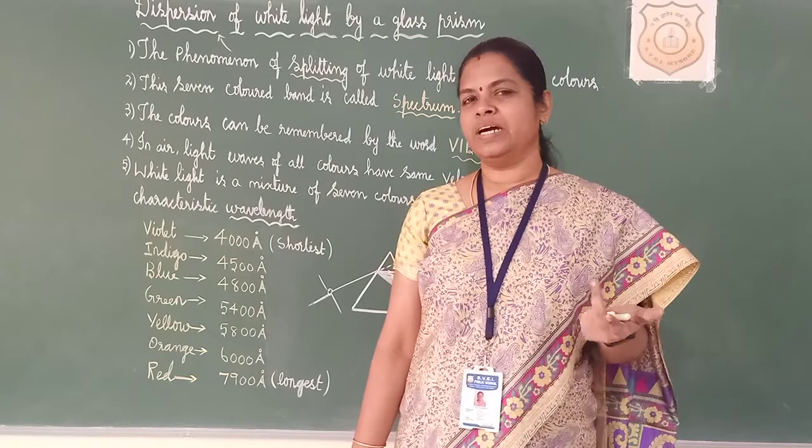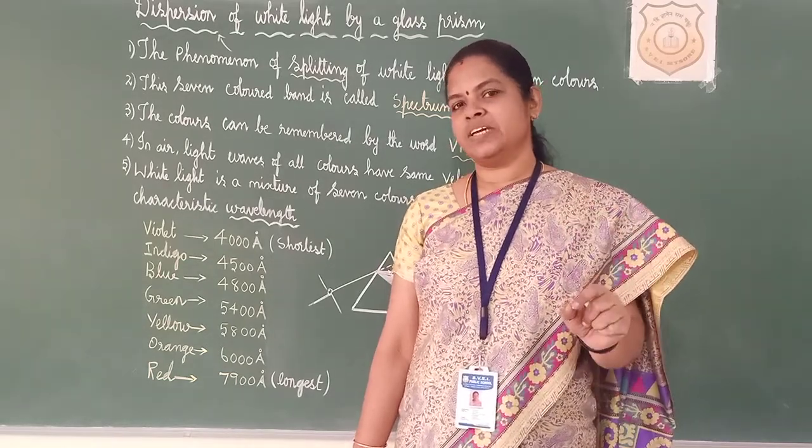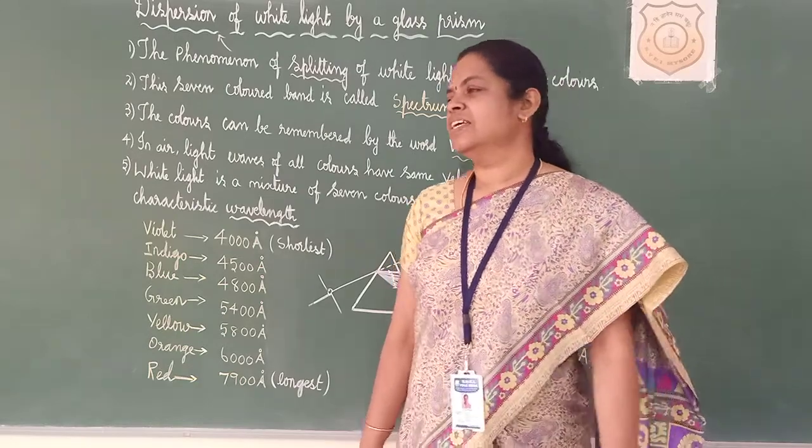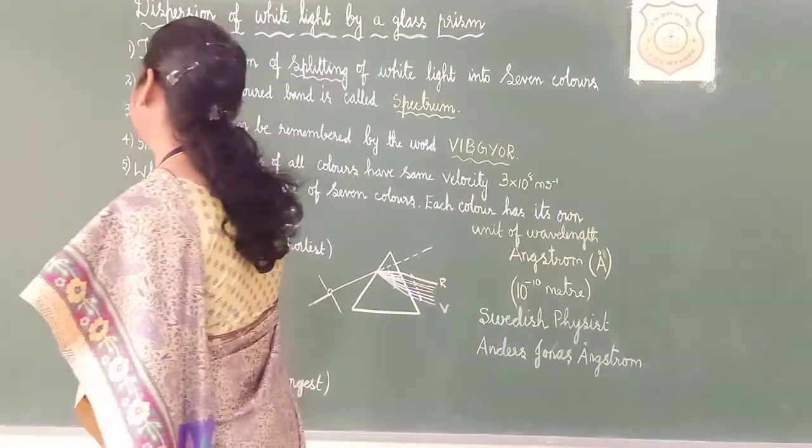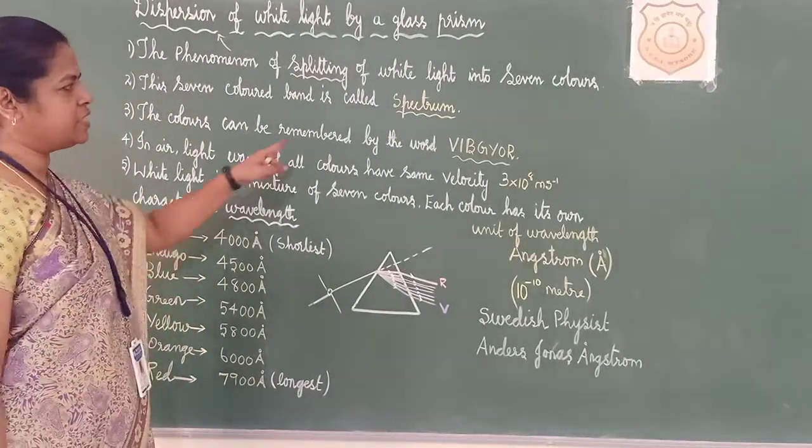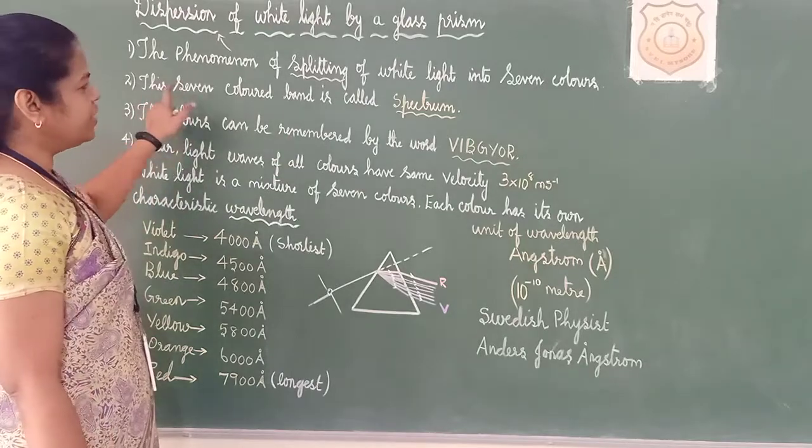No need to by heart. Just keep this in mind like splitting of what? White light into seven colours is called dispersion. Now, seven colours we are studying. That can also be called spectrum. Seven colours.